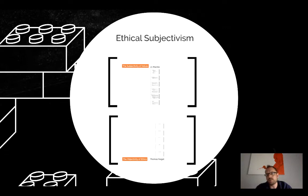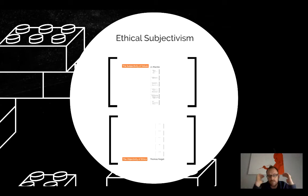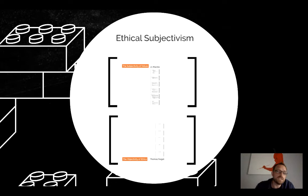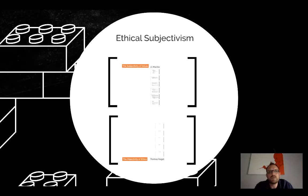Why are we talking about ethical subjectivism? In our previous video, we looked at the problem of cultural relativism. We looked at Rachel's argument against the cultural differences argument, which basically says that there are different cultural moral values, therefore there is no right or wrong moral values. He argues persuasively that that's an invalid argument. But he also suggests we need to take relativism seriously, as there are potentially major issues and consequences that would follow from relativism. We should be clear that ethical subjectivism is not the same thing as moral relativism, but turning to subjectivism will help us understand some of the problems related to moral relativism.